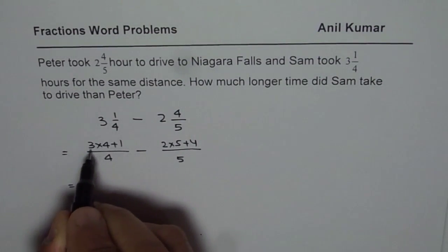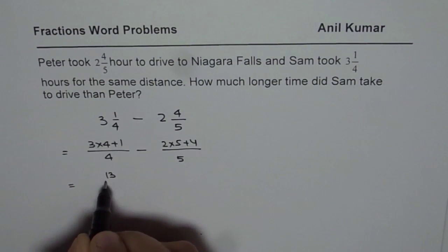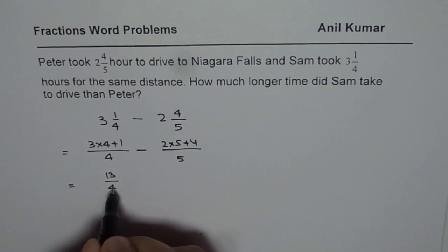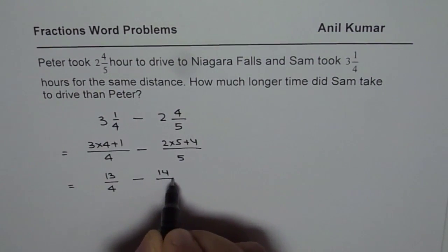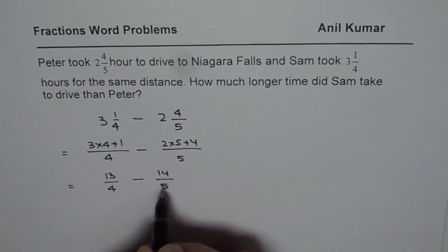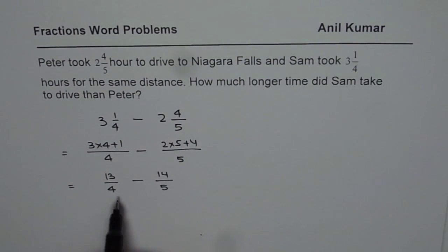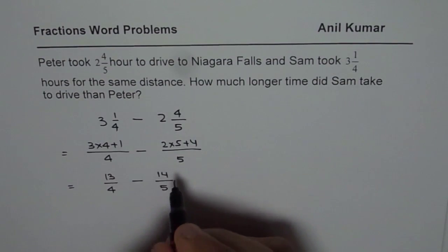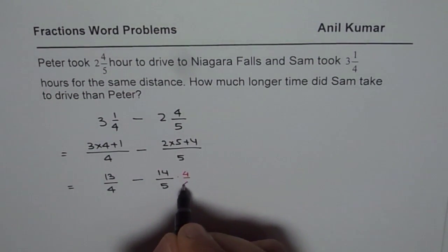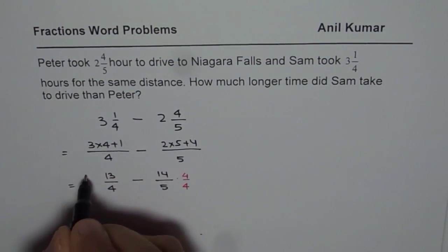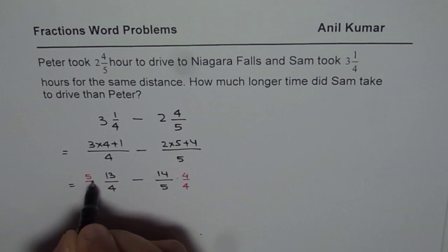So let us calculate: it is 13 over 4 minus 14 over 5. Now to find the difference we should have a common denominator. To make a common denominator I have to multiply 13/4 by 5 over 5, and multiply 14/5 by 4 over 4.